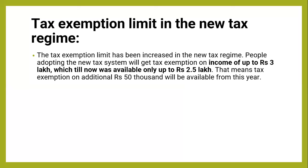As I told you, the basic slab was before 2,50,000, meaning if your income is below that, there is no tax. But now this year, up to 3,00,000 income there is no tax — but this is in the new tax regime. In the old tax regime, it remains at 2,50,000. So in the new tax regime you get an additional 50,000 benefit.